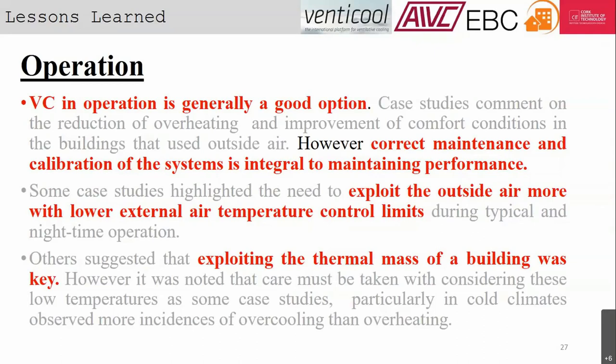In summary, VC is generally a good option. Correct maintenance and calibration is integral. We need to exploit outside air more with lower external air temperature control limits, and consider whether those limits change between daytime occupancy and nighttime operation, allowing variation in your low temperature control limit. Exploring thermal mass was highlighted as absolutely key, but care must be taken — in cold climates, particularly during shoulder seasons when transitioning from winter to summer, overcooling can be a problem.